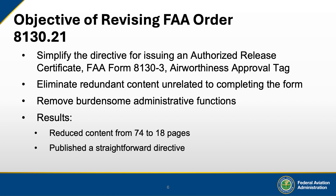The main objective of revising FAA Order 8130.21 was to simplify the guidance for issuing the Authorized Release Certificate, FAA Form 8130-3, Airworthiness Approval Tag. The updated order reaffirms its primary purpose — providing clear instructions for completing the form — by removing redundant content unrelated to this task. It also eliminates unnecessary administrative steps that added complexity without improving compliance or efficiency. The result is a streamlined document that reduced the order's length from 74 pages to just 18, functioning as a clear, easy-to-understand directive that is easier to implement.